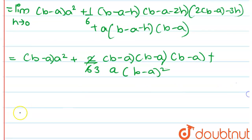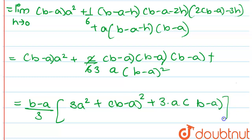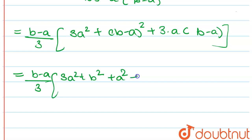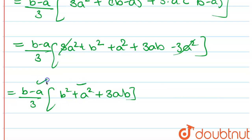Taking (b-a)/3 as common factor and opening the brackets: (b-a)/3 times [3a² + (b-a)² + 3a(b-a)]. Expanding (b-a)² = b²+a²-2ab and 3a(b-a) = 3ab-3a², so 3a²+b²+a²-2ab+3ab-3a² simplifies to b²+a²+ab. Therefore the answer is (b-a)/3 · (b²+ab+a²), which equals (b³-a³)/3.